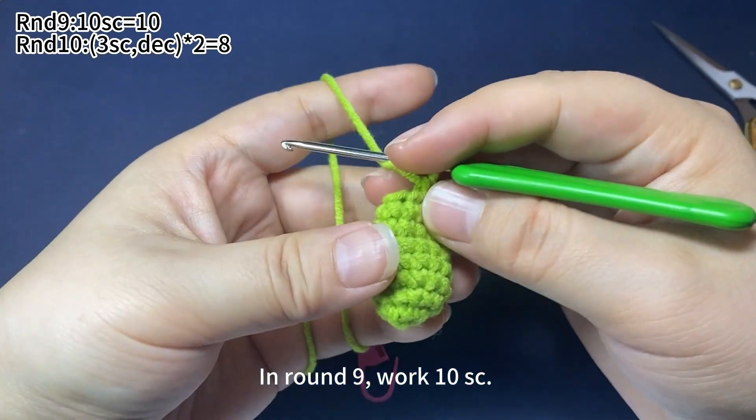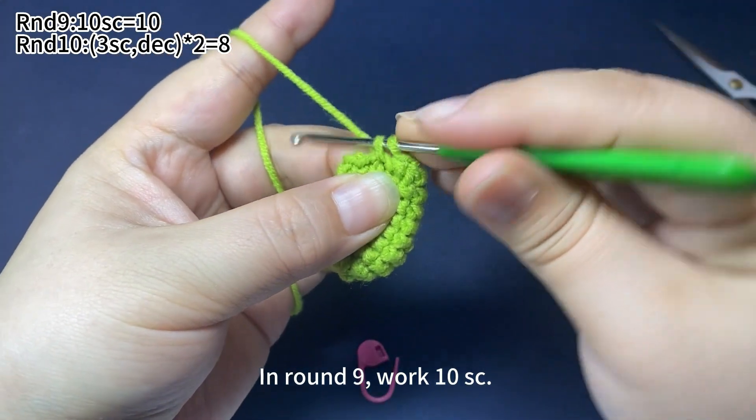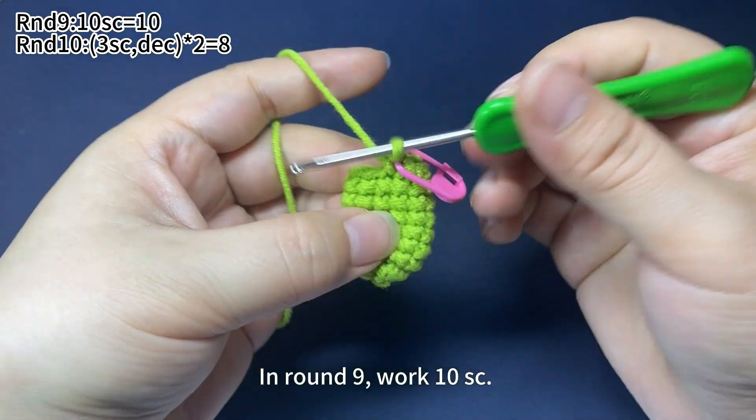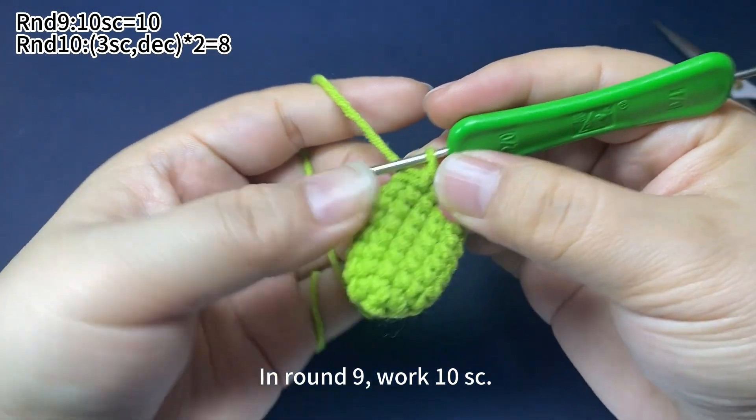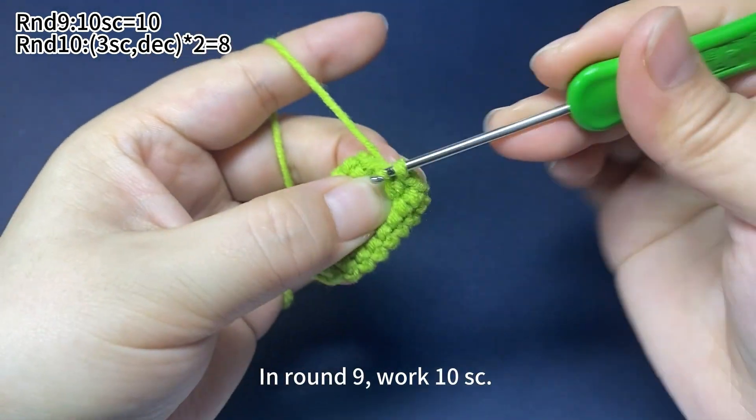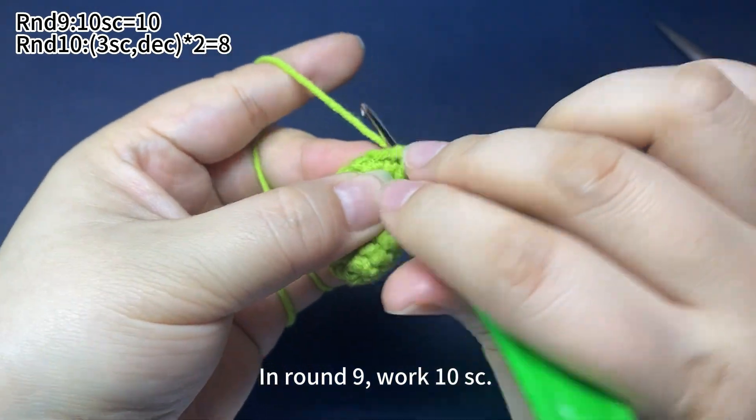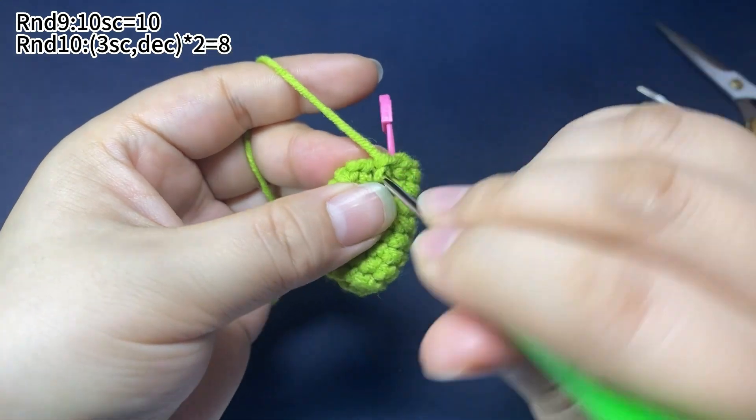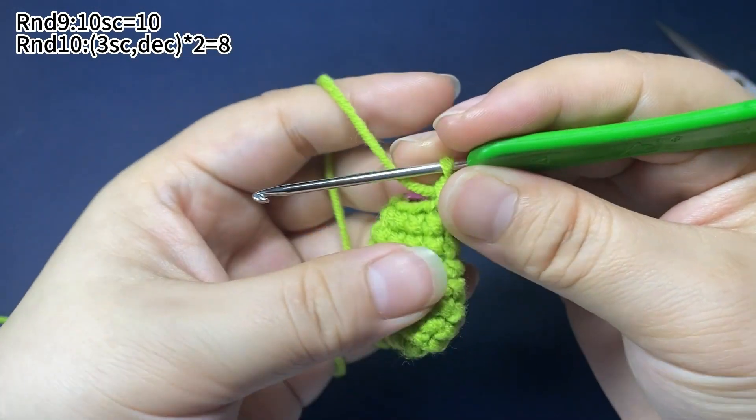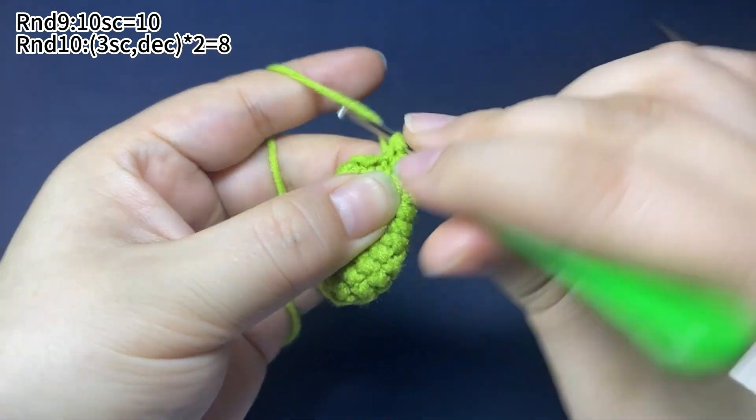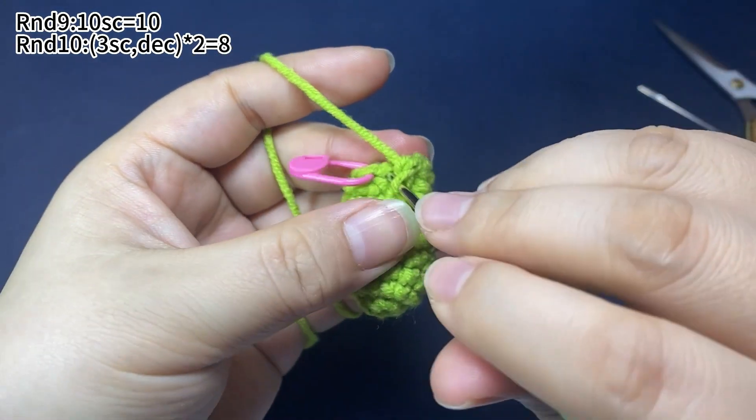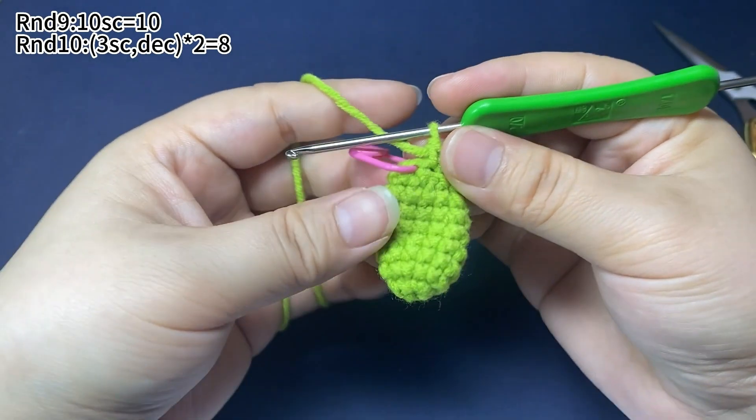In round 9, work 10 single crochets. Place a marker in the first stitch. Round 9 is finished.